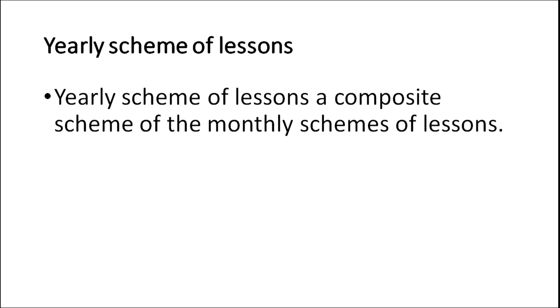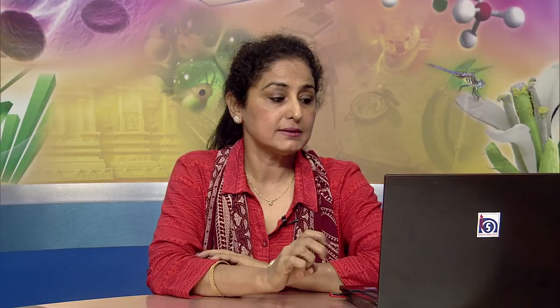The yearly scheme of lessons is a composite scheme of the monthly schemes. To prepare it, you look at the total number of periods available during the year, the total periods required to complete teaching, and the quantum of course contents — how many units and sub-units, their complexity, and how much time to devote to each. You then spread the units to be taught sequentially, month-wise for the entire year.